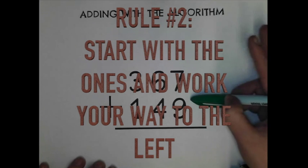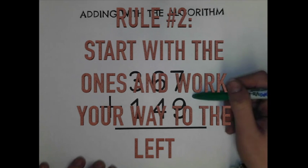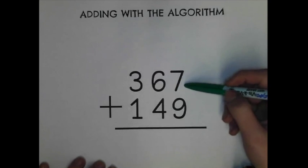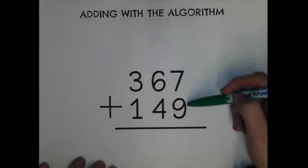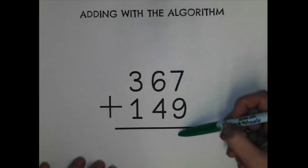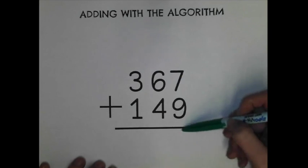Rule number two is you have to always start at the one place. So I'm going to start at my one place and I'm going to add my seven ones plus my nine ones. Seven plus nine I know equals sixteen. But pause. I can't write sixteen down here because I can only put one digit in the one place.